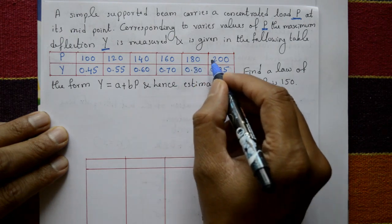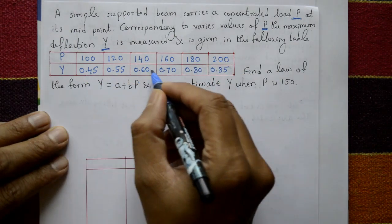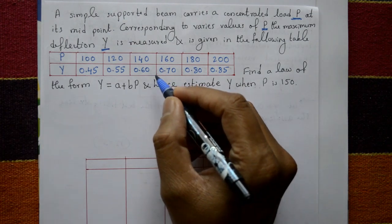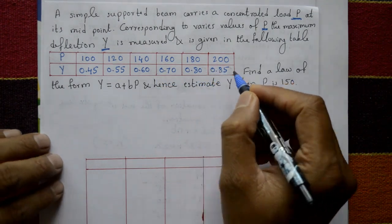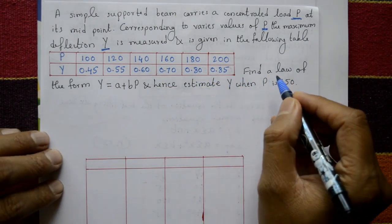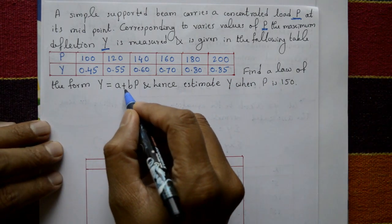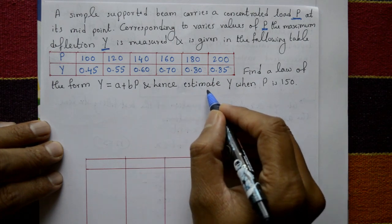120, 140, 160, 180, 200. And Y values are given: 0.45, 0.55, 0.60, 0.70, 0.80, and 0.85. Find a law of the form Y is equal to A plus BP, and hence estimate Y when P is 150.